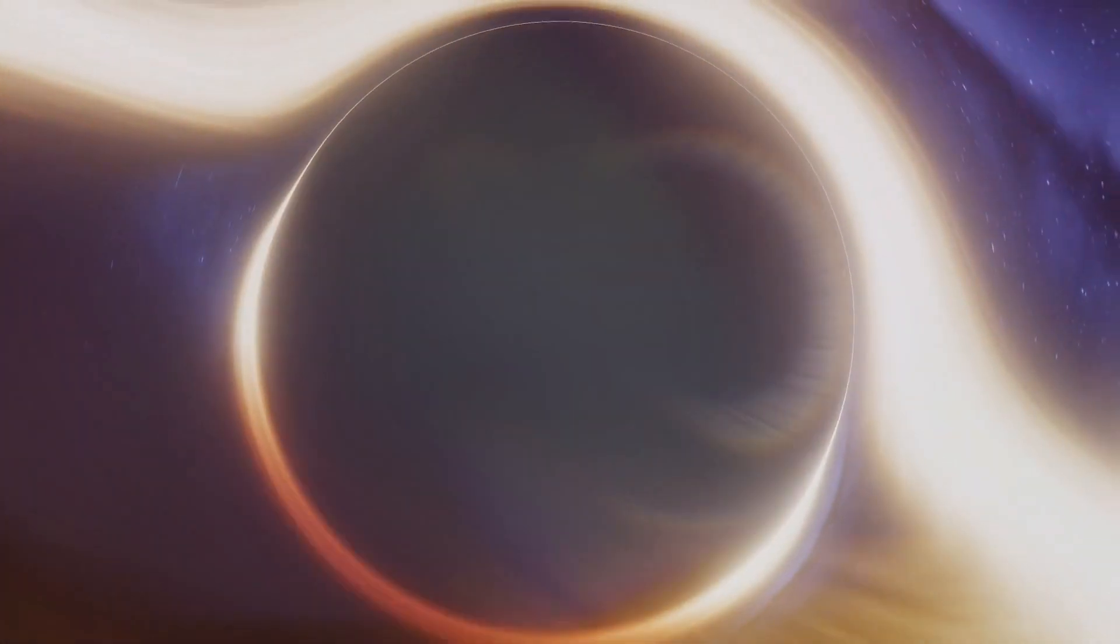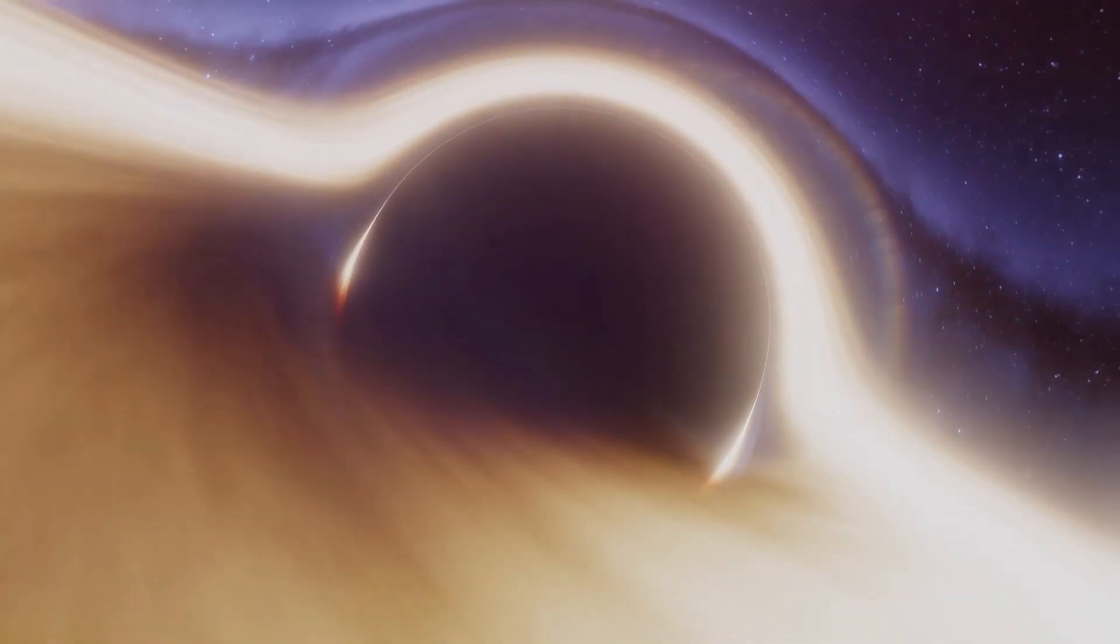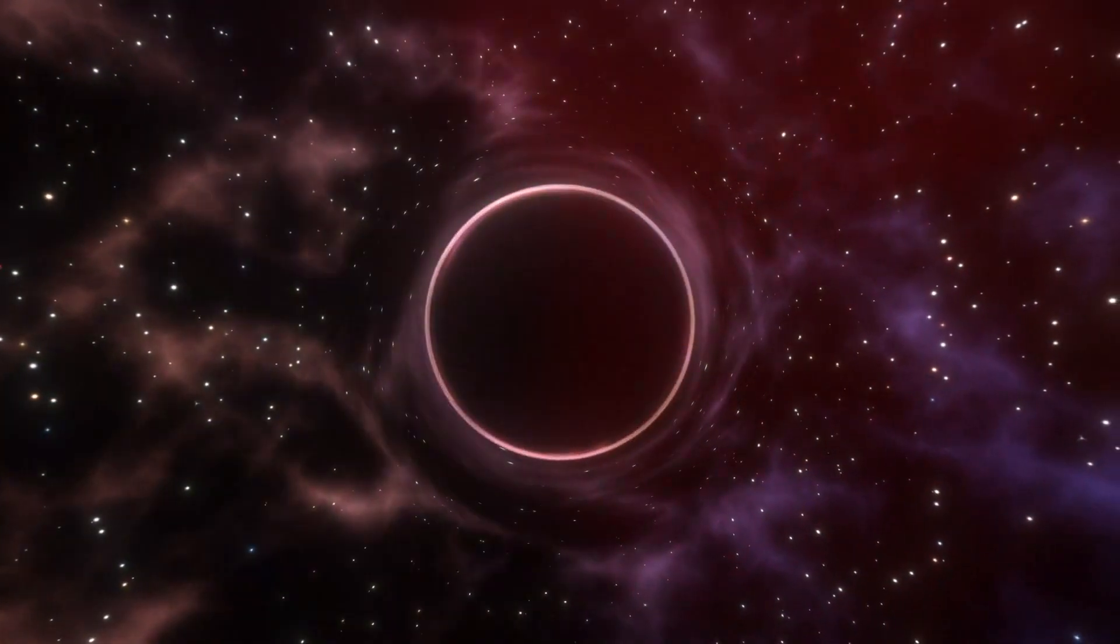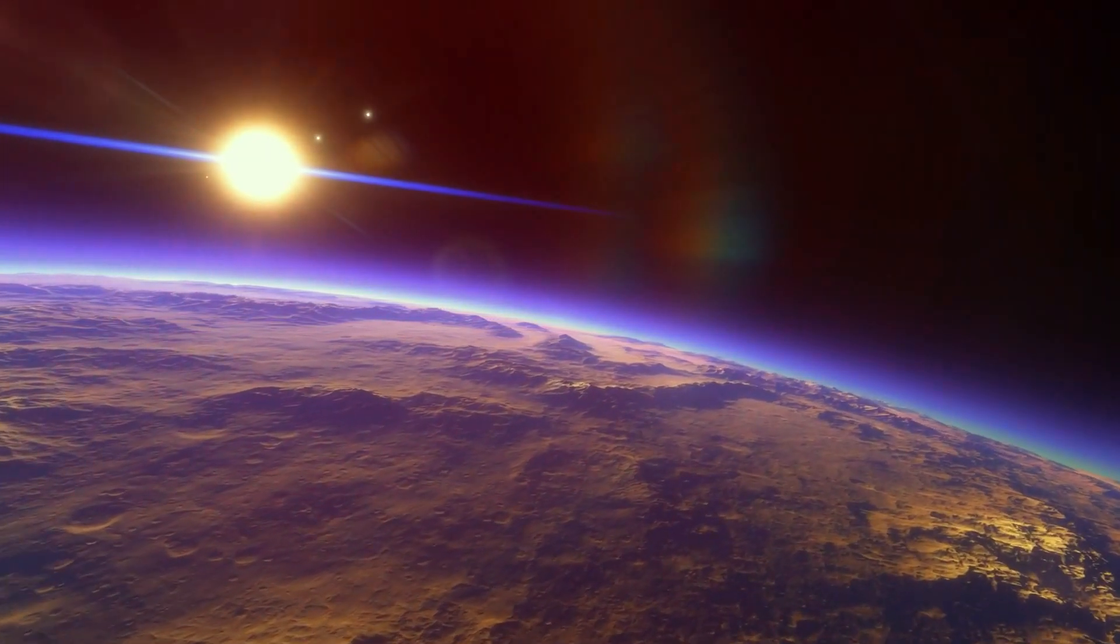The 12.8 billion year old black hole that has been observed was found in 2020. But how could a black hole form at a time when it was thought that matter was still too diffused to collapse under gravity?